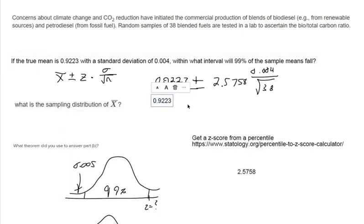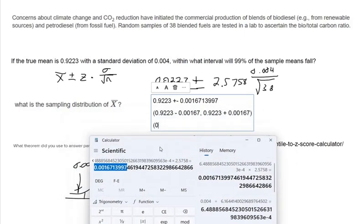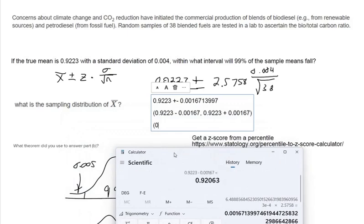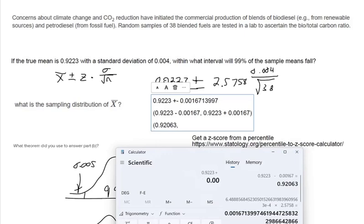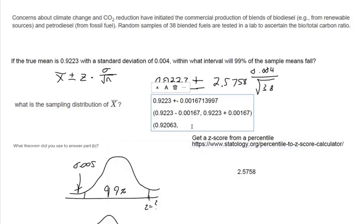So 0.9223 plus or minus this value. And that plus or minus symbol that I'm drawing, that means do it twice. Do it once for plus and that's your lower end. Sorry, once for minus would be your lower end. And here we don't need this many decimals. And then do it once for plus. So I'm making the calculation twice. And that will be our interval. Then we'll be done with the hardest part of this question. So 0.9223 minus 0.00167, and then we've got 0.9223 plus 0.00167. And that is the answer to this first part. That's the interval in which 99% of the sample means fall.